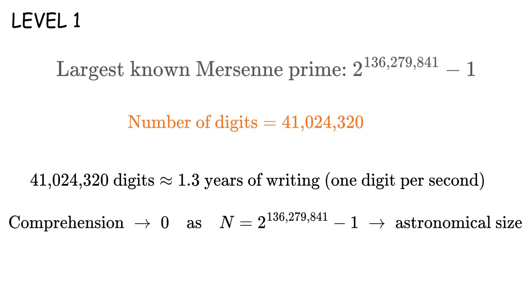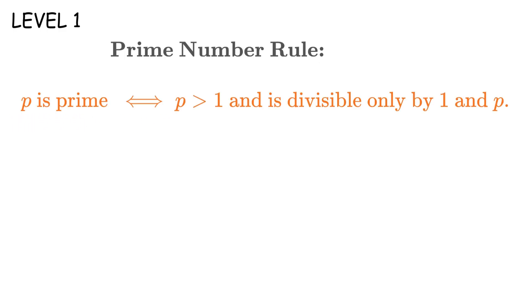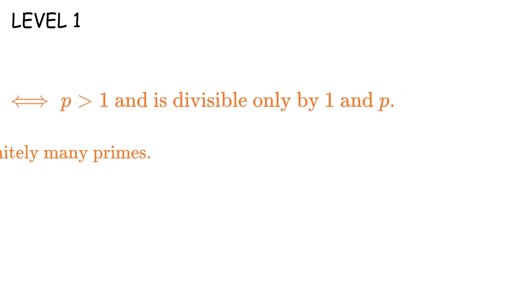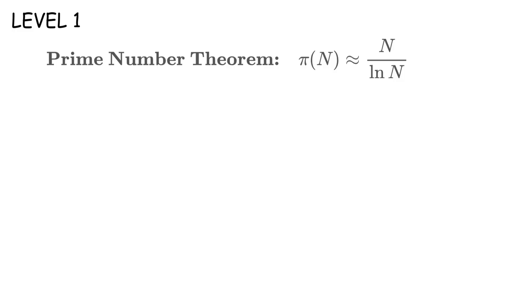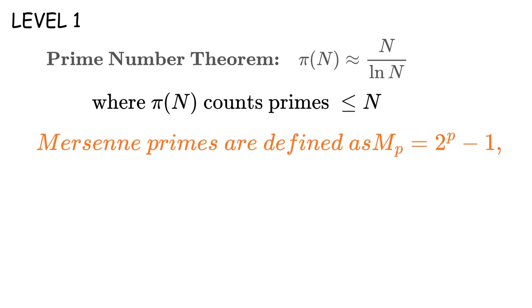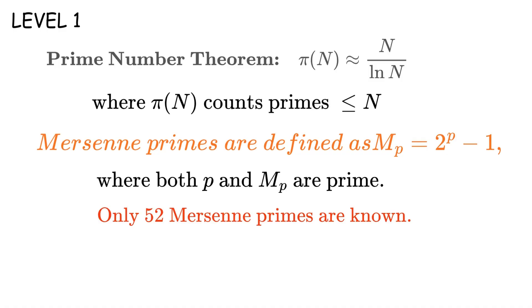So these are the rules. A prime number p is divisible only by 1 and p. Euclid proved there are infinitely many primes around 300 BC using a beautiful contradiction proof. The fundamental theorem of arithmetic says every number breaks down into a unique product of primes. The prime number theorem gives us π(n) approximately equals n divided by the natural logarithm of n, where π(n) counts primes up to n. And Mersenne primes are defined as M_p equals 2 raised to the power of p minus 1, where both p and M_p are prime. Only 52 Mersenne primes have ever been found. The largest is M_136,279,841.